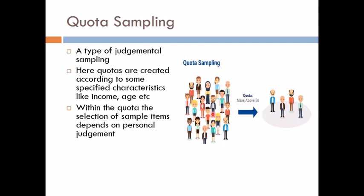If a person refuses to respond, the interviewer simply selects someone else without applying any technical procedure. Because of the risk of personal prejudice and bias entering the selection process, quota sampling is not widely used in practical work. These non-probability methods are generally not acceptable because they lack technicalities and the results tend to be biased, depending completely on the investigator.